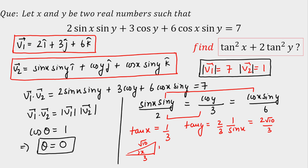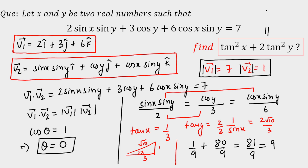Now with tan(x) = 1/3 and tan(y) = 2√10/3, we can calculate tan²(x) + 2 tan²(y). We get tan²(x) = 1/9, and 2 tan²(y) = 2 × (40/9) = 80/9. Adding: 1/9 + 80/9 = 81/9 = 9. So tan²(x) + 2 tan²(y) = 9. This is our final answer.